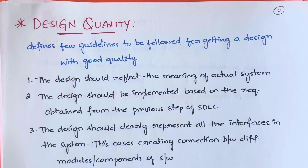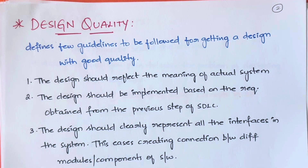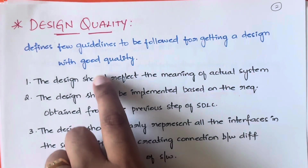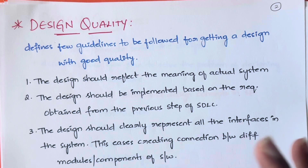Hello everyone, welcome back to my YouTube channel Trouble Free. In this video we are going to see what is design quality in the subject of software engineering. In my previous video I explained the design process and the three principles in that. Design quality is a set of guidelines you need to follow to get a design with good quality. If you get a good design, then only the next steps — the coding, the testing, the deployment — will happen successfully in the software development life cycle.